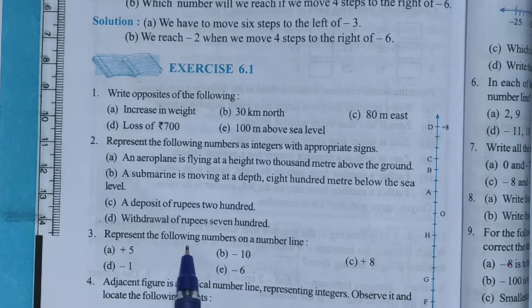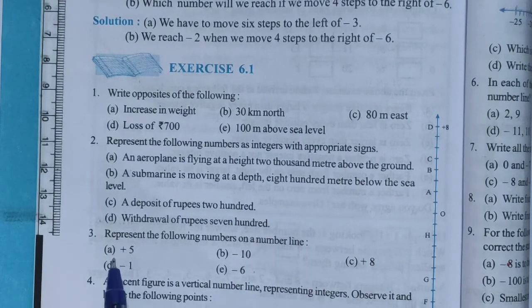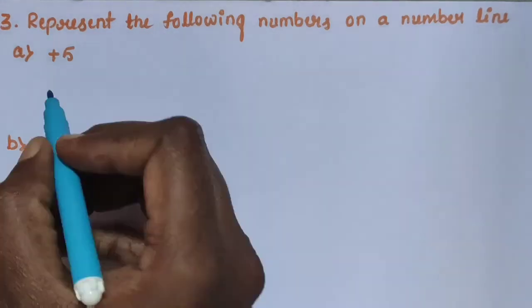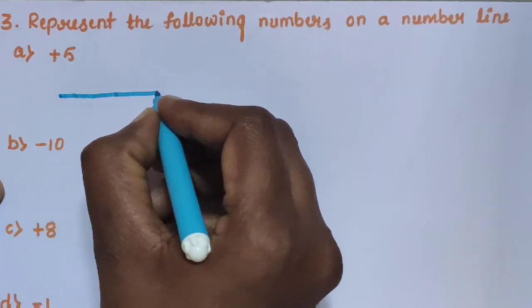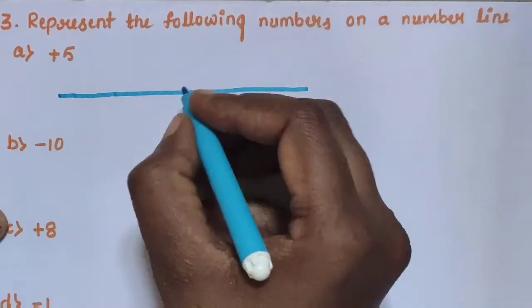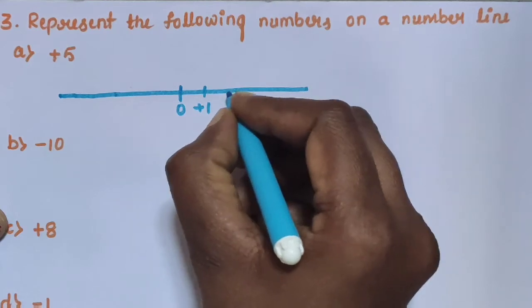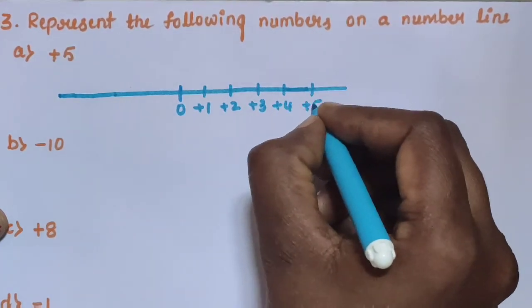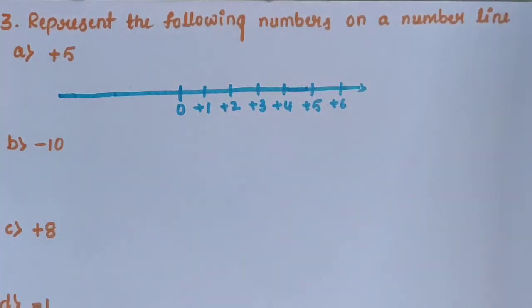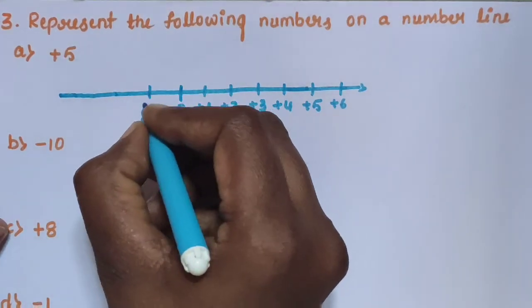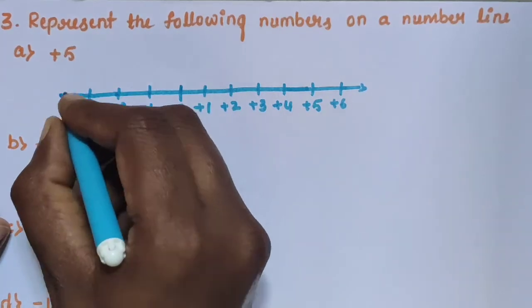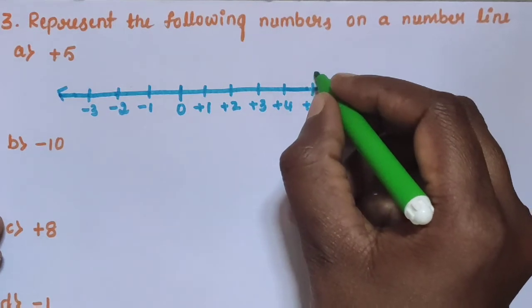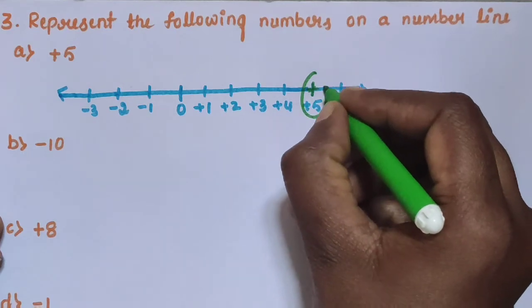Question 3: Represent the following numbers on a number line. Sub-question A: Plus 5. Draw the number line with 0 in the center, positive numbers to the right: plus 1, plus 2, plus 3, plus 4, plus 5, plus 6 and so on, and negative numbers to the left. Mark and represent plus 5 on the number line.